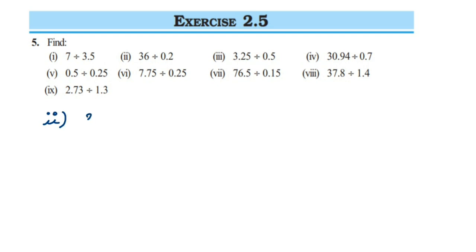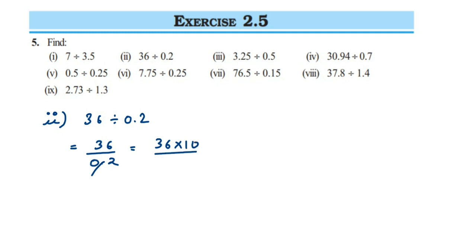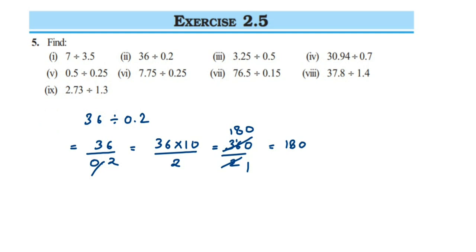Second question: 36 divided by 0.2. This equals 36 upon 0.2. Remove the decimal and put 10 in the numerator, giving 36 multiplied by 10 upon 2, which is 360 divided by 2. Cancelling: 2 eights are 16, leaving 180. The answer is 180.